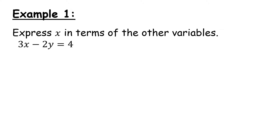So let's start with the first example. We've been asked to express x in terms of the other variables. In this example we only have y as another variable, but that's absolutely fine. The goal is to get x on its own. We should see straight away that this piece here is stopping x from being on its own, so let's get rid of this first.